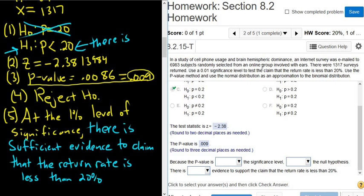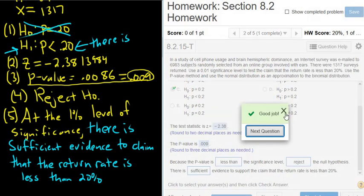So it's right there, that sentence. Claim that. And then everything after the words claim that: the return rate is less than 20%. So because the p-value is less than the significance level, we reject the null hypothesis. So there is sufficient evidence to support the claim that the return rate is less than 20%. Absolutely perfect. What a great problem.